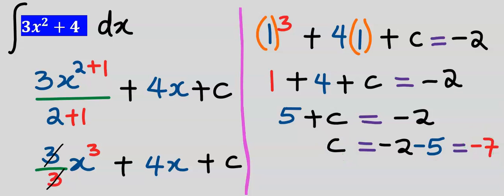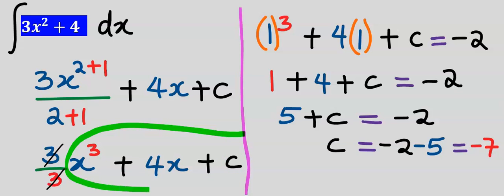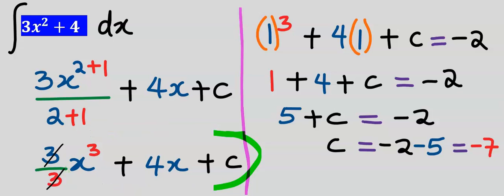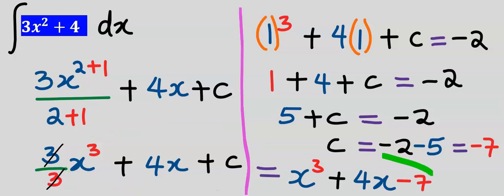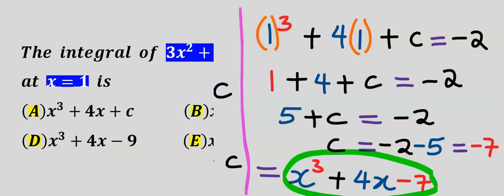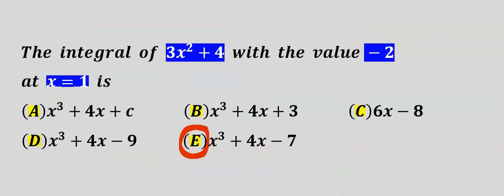We substitute the value of C which is minus 7 into our result, and our final result is x to the power of 3 plus 4x minus 7. From the options our answer is E.